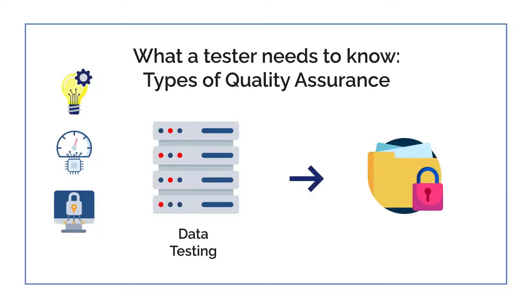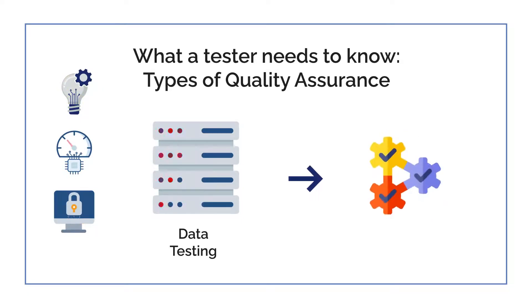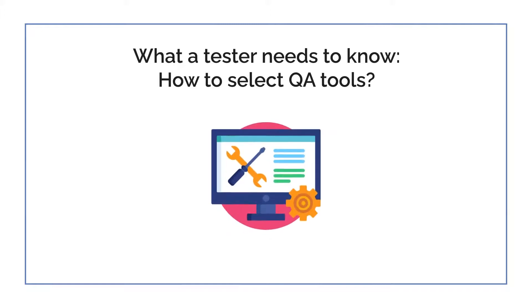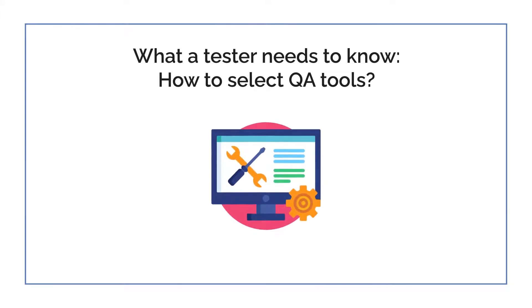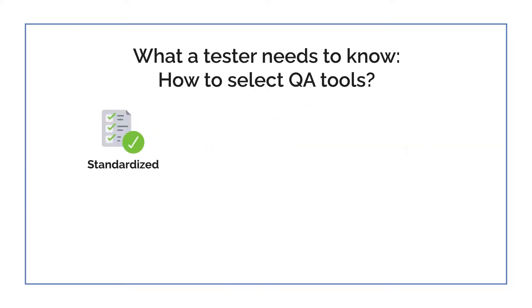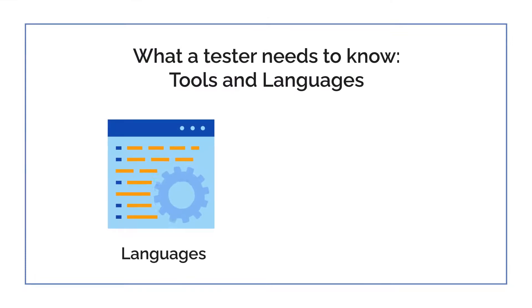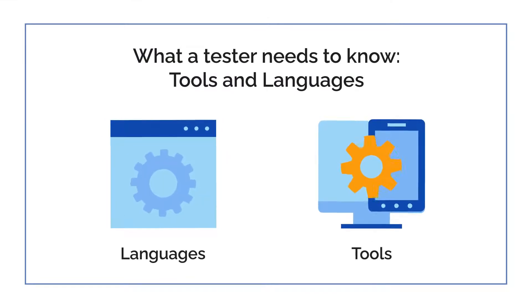In order to achieve consistent results with minimal efforts, the tools used in QA should be selected after ensuring that they are standardized, compatible, cost-effective, efficient, scalable, and robust. Following are the essential languages and tools that every tester must have in their arsenal.